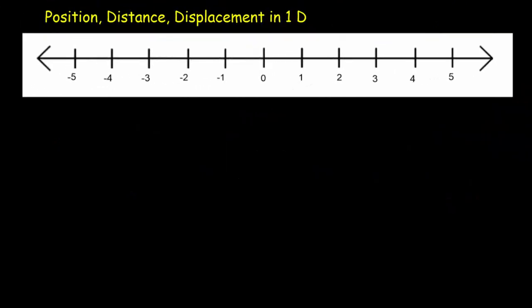Let's start by talking about the concepts that describe where we are: position, distance, and displacement. We're going to do it in one dimension, which simply means that you're confined to move along a line — you could move left or right, but no other direction. We might imagine the street on which we live, with our home at the origin at zero. If we're located three kilometers to the right of our home, we'd say that our position was plus three.